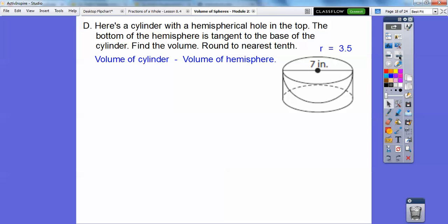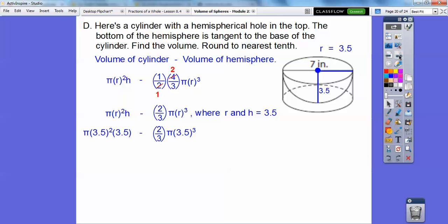So it's going to be the cylinder minus the hemisphere, and the radius is 3.5, it's half of that 7 right there. Okay, so pi r squared h minus, and then the hemisphere is 1 half of 4 thirds pi r cubed. So when we plug that in, where r is, and h is 3.5, because the height is the same as the radius right there. And then, so if we crank that out, we get about 44.9 inches cubed right there, okay?